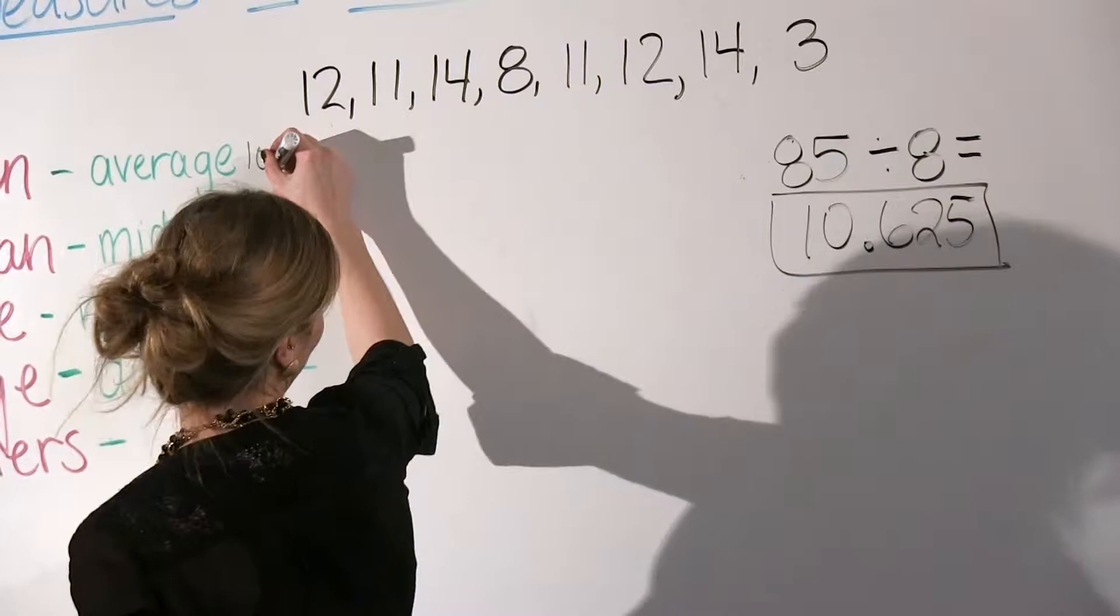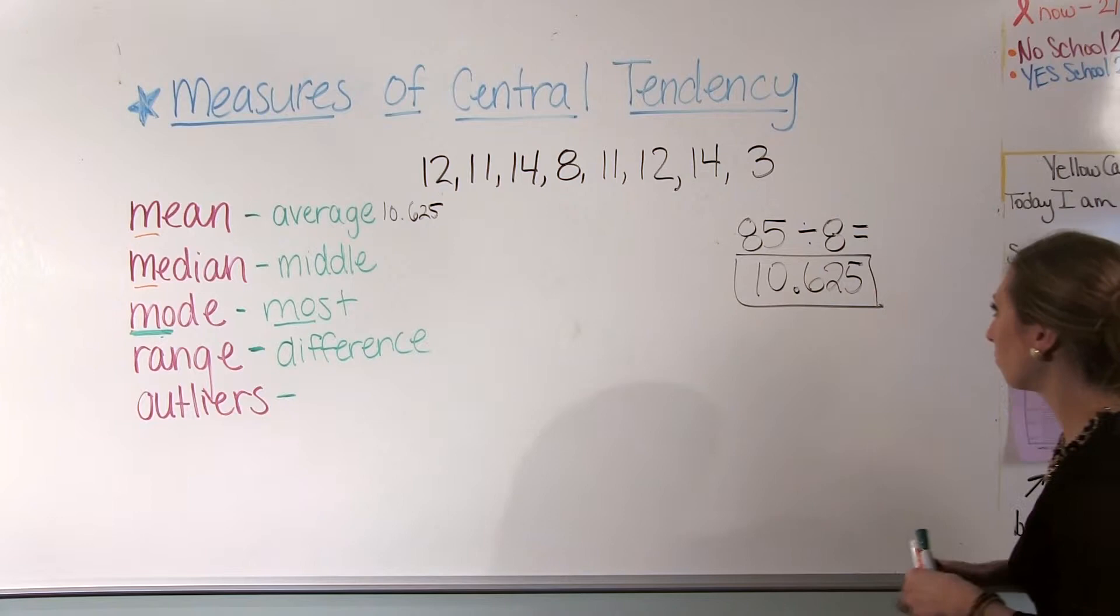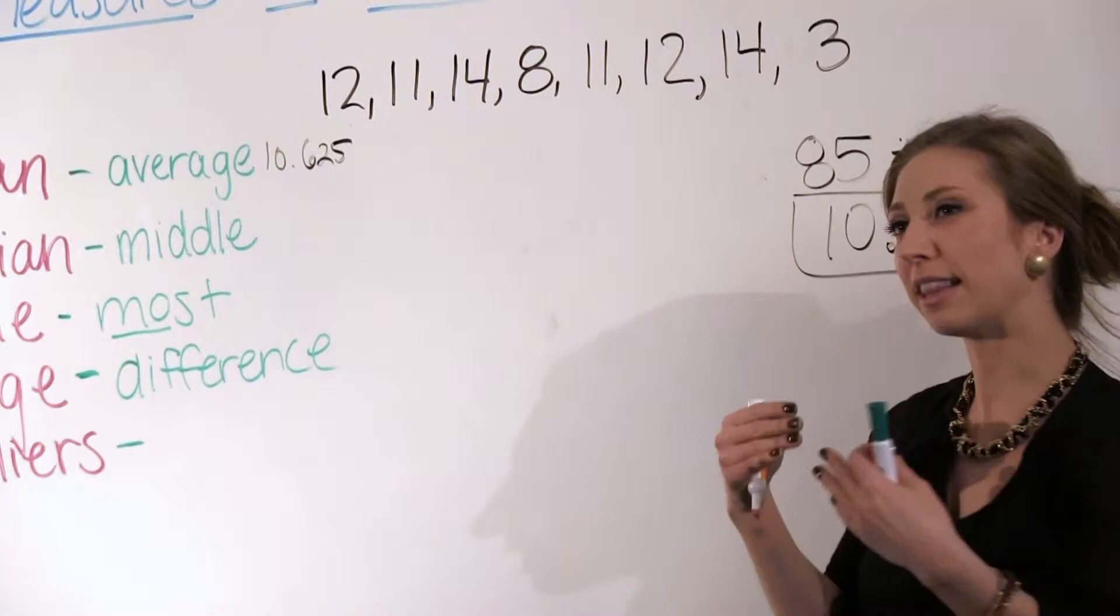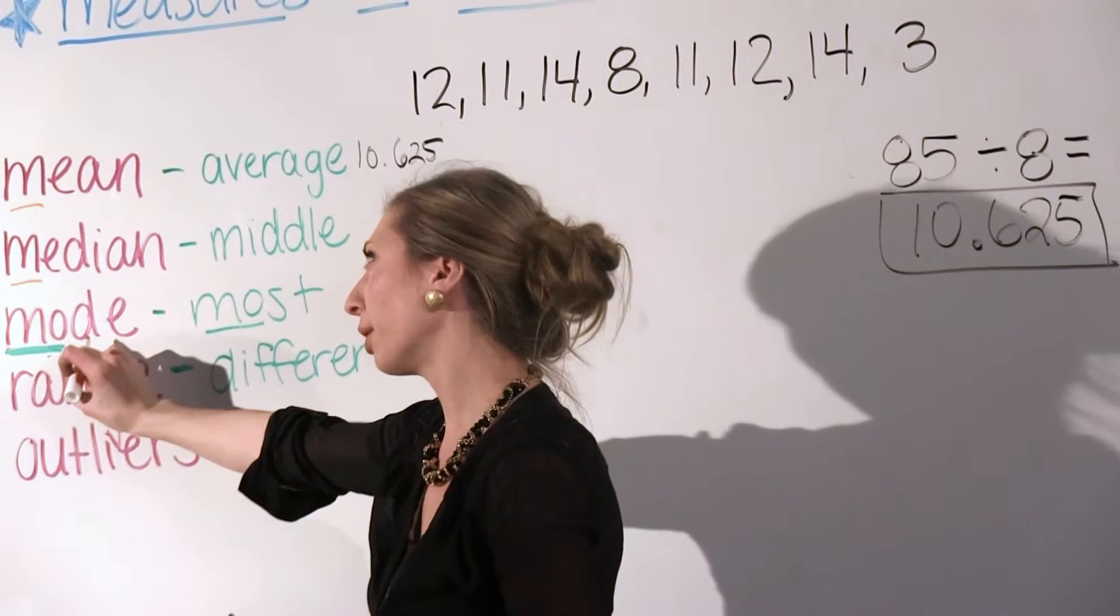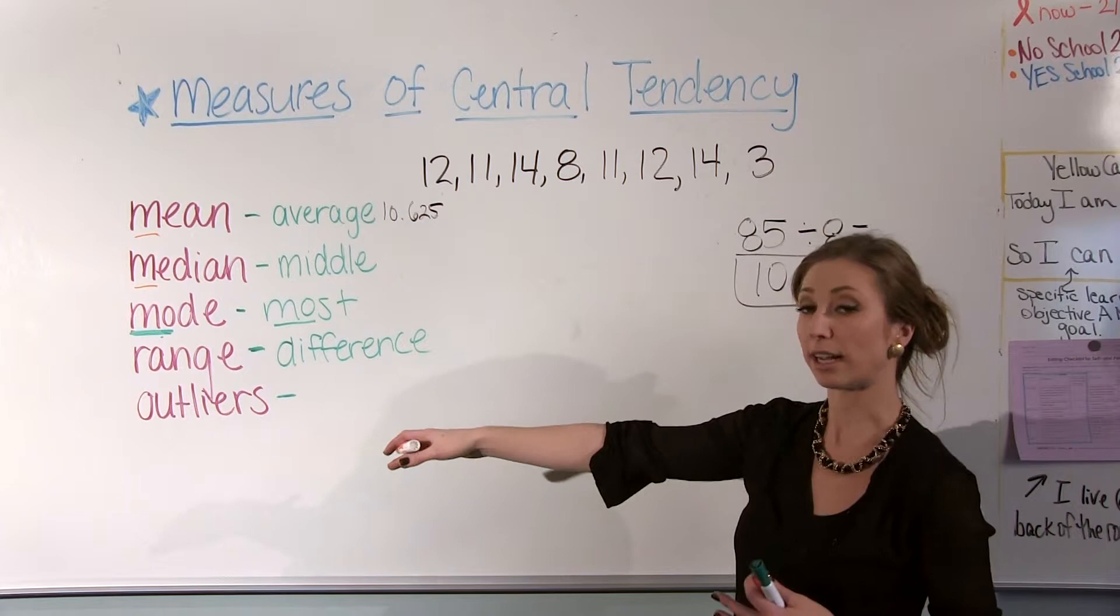Now the median, or the middle number, this is where we have to put our numbers in order, our data in order from least to greatest. And I always get in the habit of even doing this first, just because you need the numbers in order for median, and you pretty much need them in order for mode, and then it also helps you calculate a range and any outliers too. It helps you see it a lot easier.